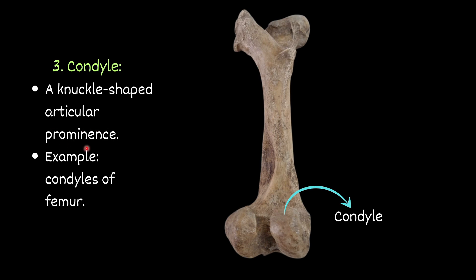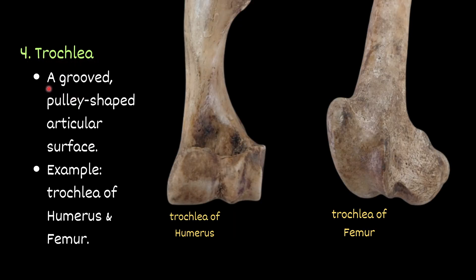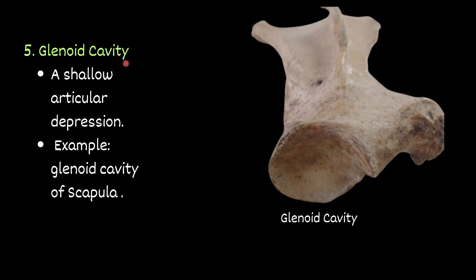Trochlea — a grooved pulley-shaped articular surface. For example, trochlea of the humerus and trochlea of the femur. You can see this structure — this is the trochlea of the femur. You can see the somewhat pulley-shaped structure, grooved. This structure is the trochlea of the femur — a grooved pulley-shaped articular surface.